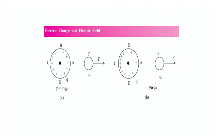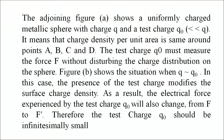In the second case, if the charge Q naught is nearly equal to the charge of the body whose field is to be determined, then it will definitely change the distribution of charge on the surface of the charged body, resulting in a change in the electric force as well. Figure A shows a uniformly charged metallic sphere with charge Q and a test charge Q naught which is very very less than Q, meaning the charge density per unit area is the same around points A, B, C, and D. The test charge Q naught must measure the force without disturbing the charge distribution on the sphere.